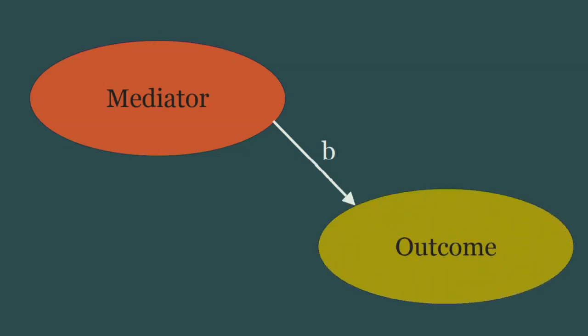And then you run a model with the mediator and the outcome, which is the b-path. If all these models are statistically significant, you can move on to the final step.